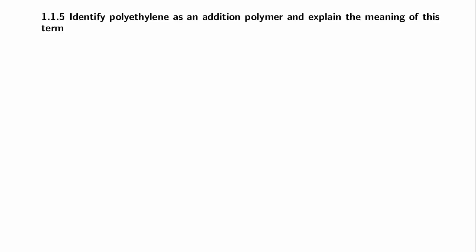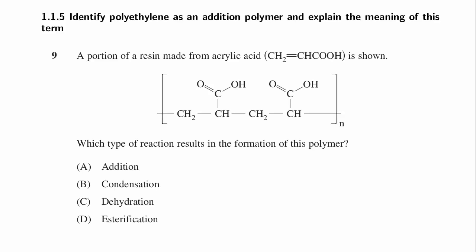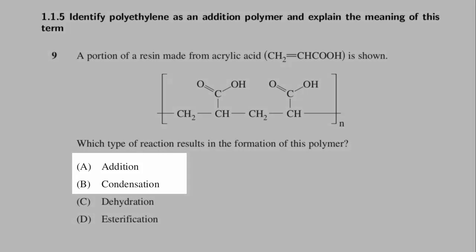Here's a multiple choice question that examines addition polymerization reactions by presenting a non-standard polymer. It's question 9 from the 2013 HSC chemistry exam. A portion of a resin made from acrylic acid is shown. Which type of reaction results in the formation of this polymer? There are only two real choices with polymerization in the HSC chemistry course: addition and condensation.